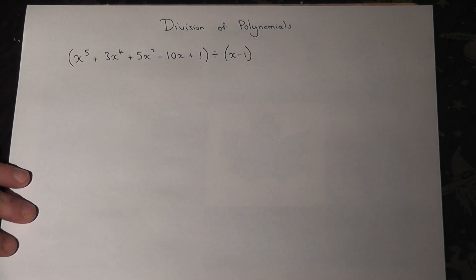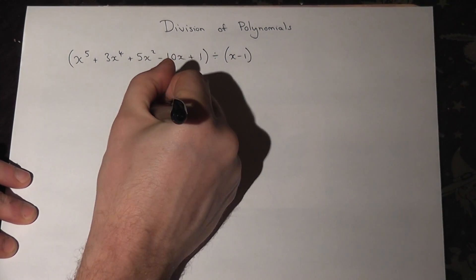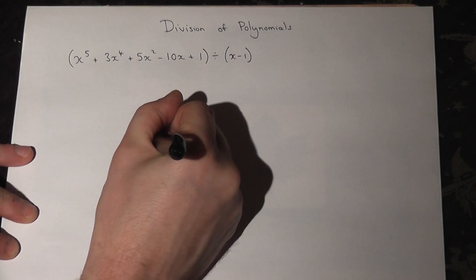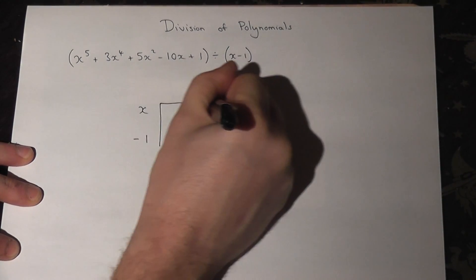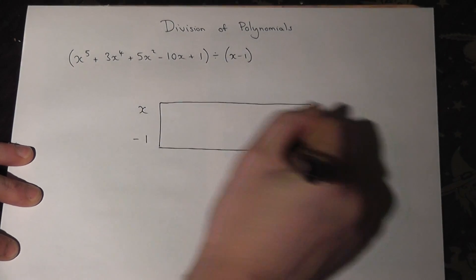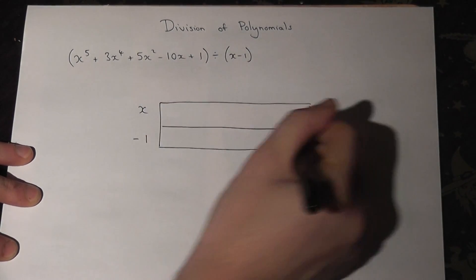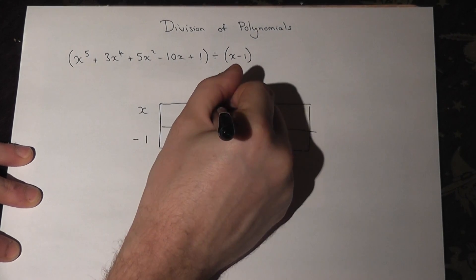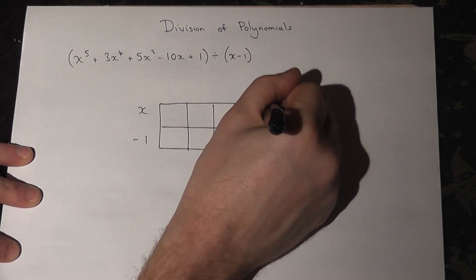What you do is you put the divisor down like so, x and minus one, and you construct a grid to the right-hand side. We're not sure yet how big the grid will be necessarily, so I'll just add some columns for the sake of it.